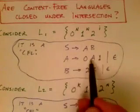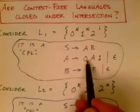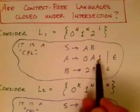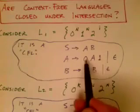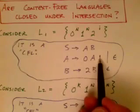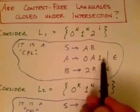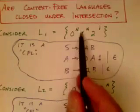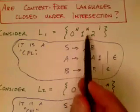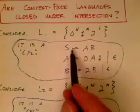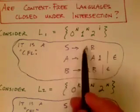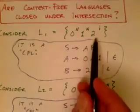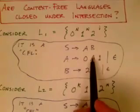Then A → 0A1 ensures the number of zeros and ones are always the same, with zeros always before the ones — the familiar pattern giving us 0^n 1^n. Finally, S → AB, so S generates the zeros and ones (from A) followed by the twos (from B).